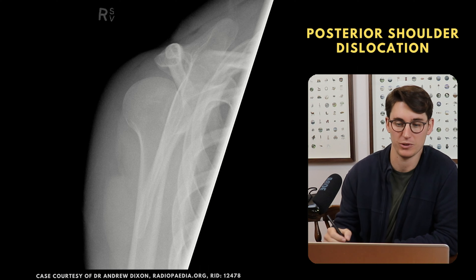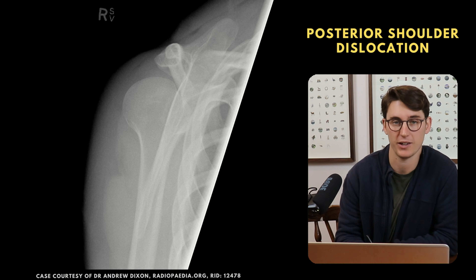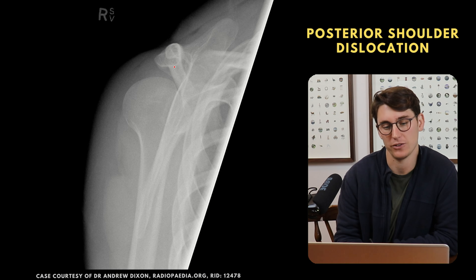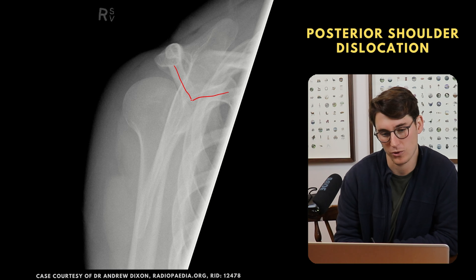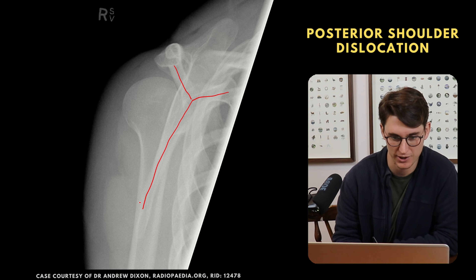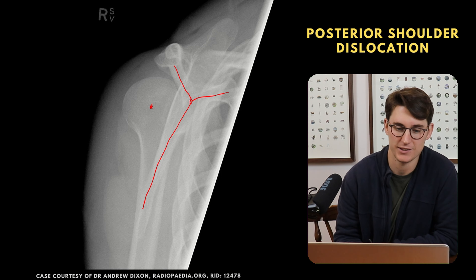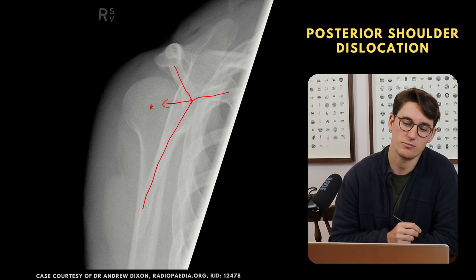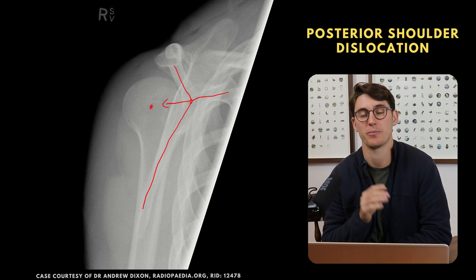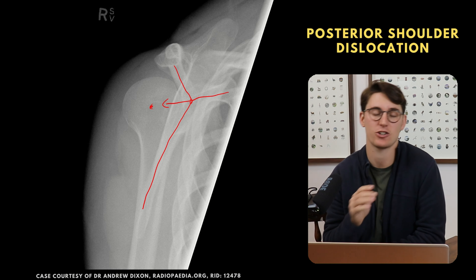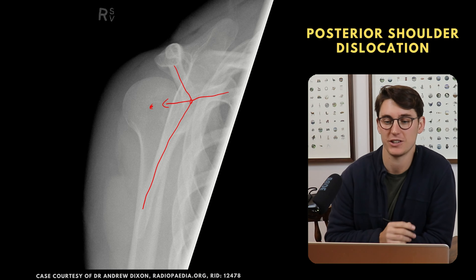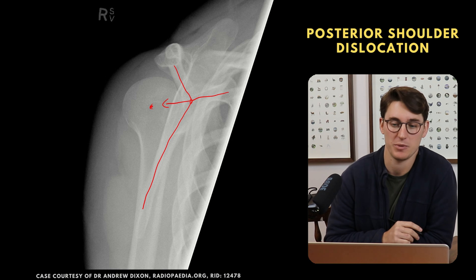Here's an example on a Y view. We have our coracoid, our acromion, and the blade of the scapula, and we can see that the center of the humeral head is lying posterior to that Y — that's a posterior dislocation. This is a much less common dislocation; the vast majority are going to be anterior.